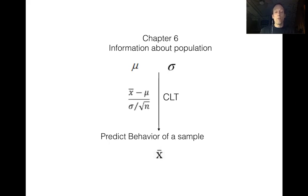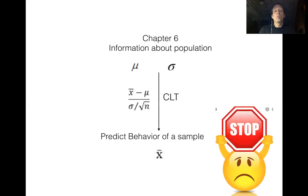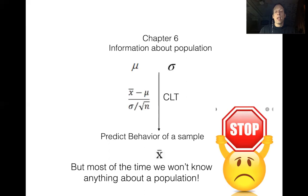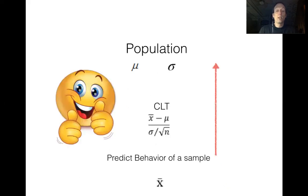There's the central limit theorem formula we've been using. But there's one little problem: most of the time in real life, we're not going to know anything about the population. So statisticians asked, if we don't know the population, how do we predict sample behavior? They came up with the idea of using the central limit theorem backwards — using a sample to tell us everything we need to know about the population. That's exactly what we're going to do in Chapter 7.